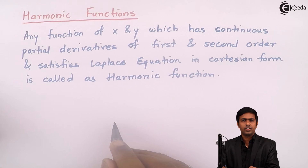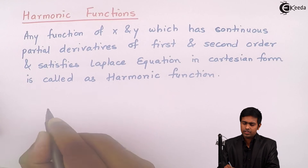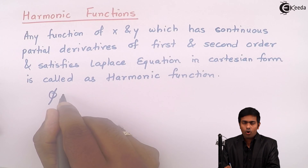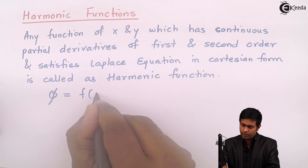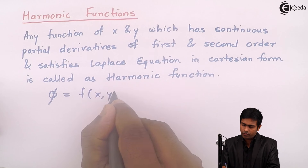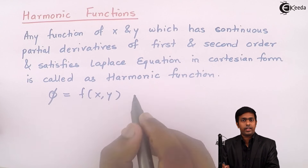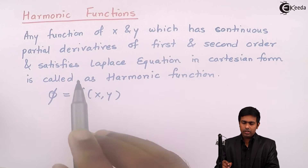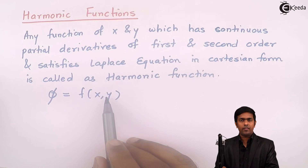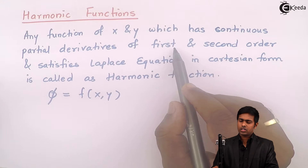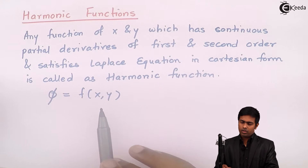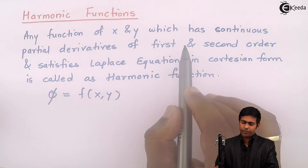To explain this definition, let's consider a function phi of x and y. The condition is that it should have first and second order partial derivatives.